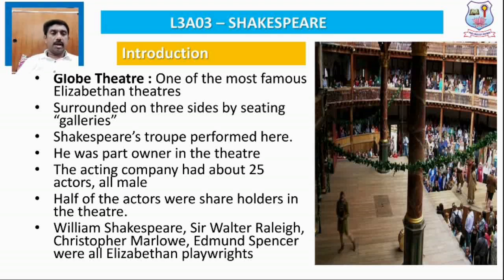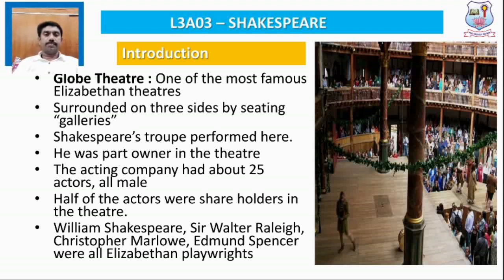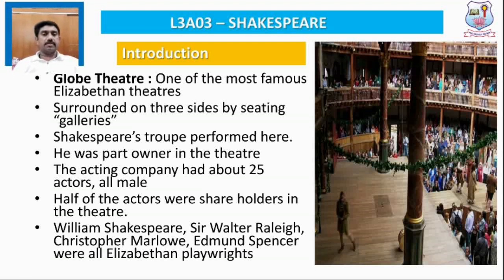The groundlings were people seated on the ground near the stage, while the first gallery level accommodated queens or kings, and the upper galleries housed noblemen, lords, and wealthy people. The Globe Theatre is where Shakespeare's troupe performed his plays, and he was a part owner. The Globe Theatre acting company had about 25 actors, all male members, with only half being shareholders. Notable contemporaries of Shakespeare include Sir Walter Raleigh, Christopher Marlowe, and Edmund Spenser.